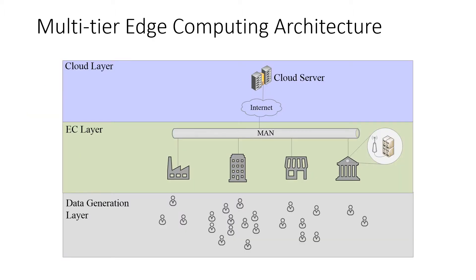So what is a multi-tier edge computing architecture? As you can see in the figure, we commonly have three tiers in this architecture. The first one is the data generation tier, where mobile users are available. Mobile users utilize WLAN access technologies to access edge resources.